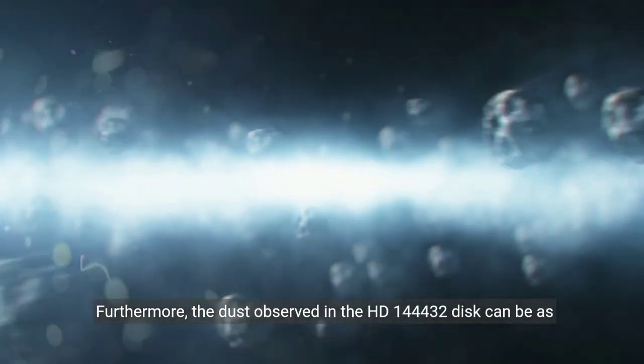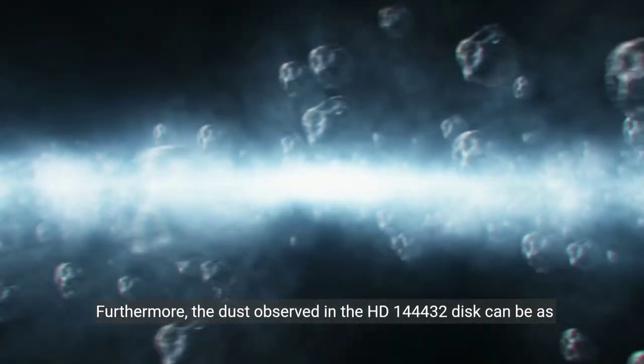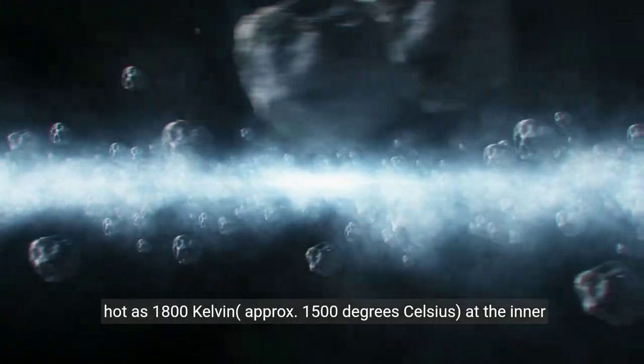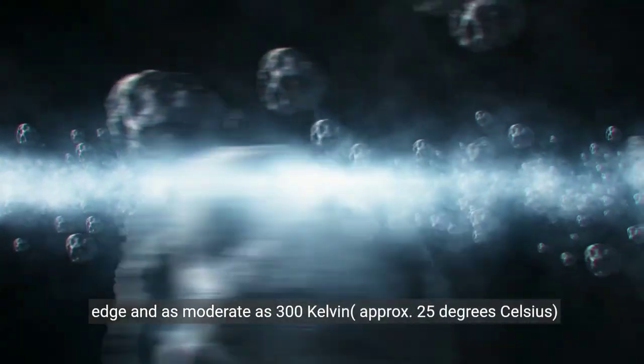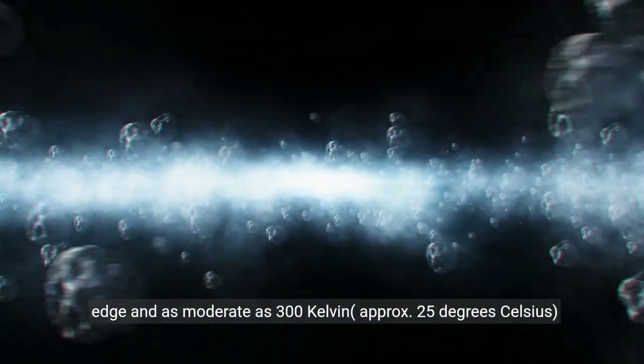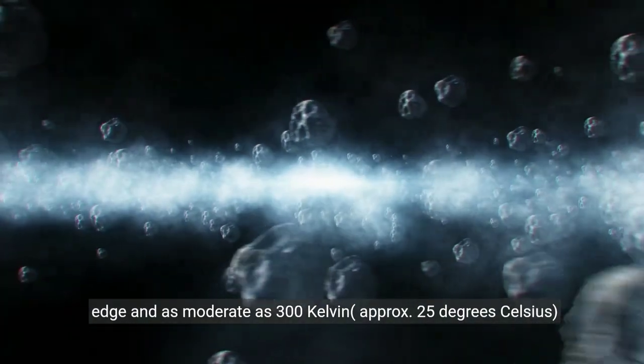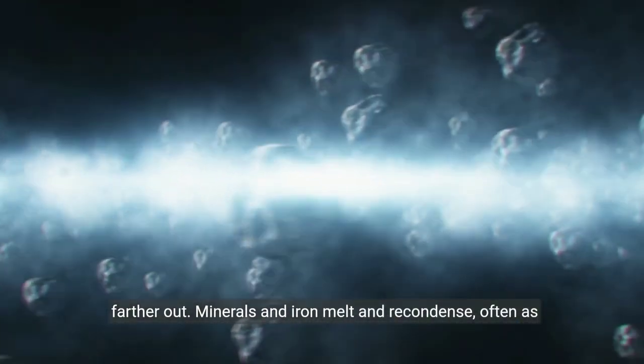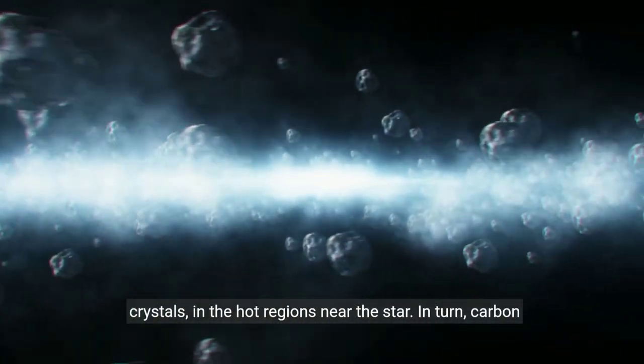Furthermore, the dust observed in the HD 44432 disk can be as hot as 1800 Kelvin, approximately 1500 degrees Celsius, at the inner edge and as moderate as 300 Kelvin, approximately 25 degrees Celsius, farther out. Minerals and iron melt and recondense, often as crystals, in the hot regions near the star.